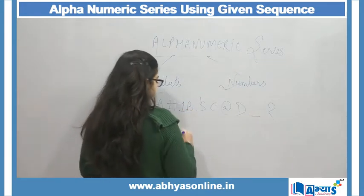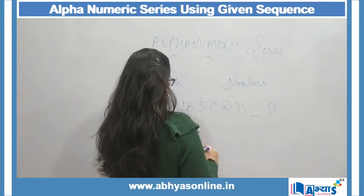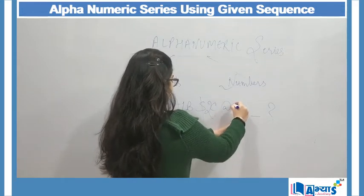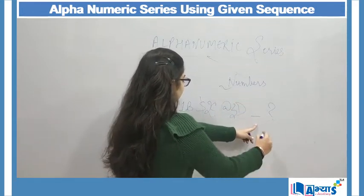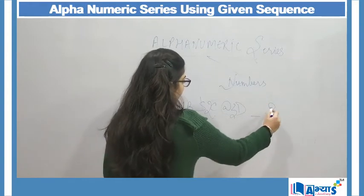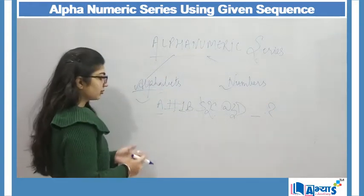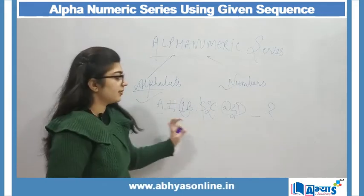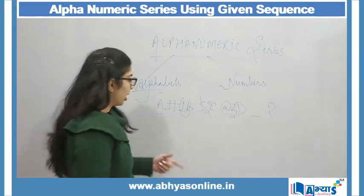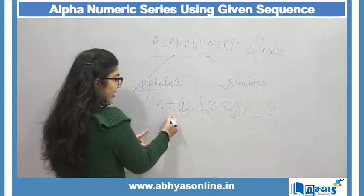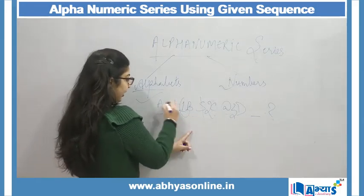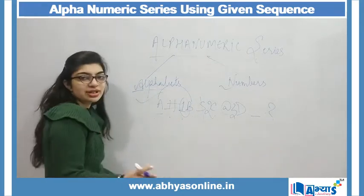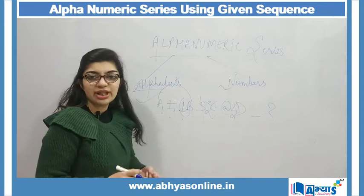From the series I know: A hai to yahan pe 1 kar dhu, B hai to 2 kar dhu, C hai to 3 kar dhu, and D hai to question mark — what comes next? My numbers have come in and my alphabets have come in. Now next kya hoga — A hash 1, B dollar 2...